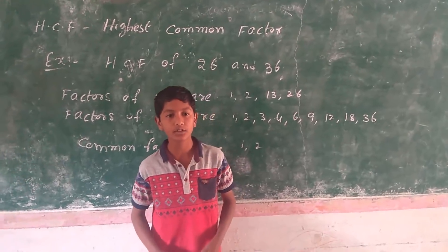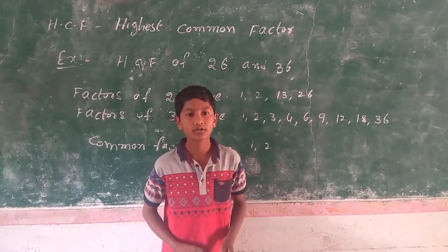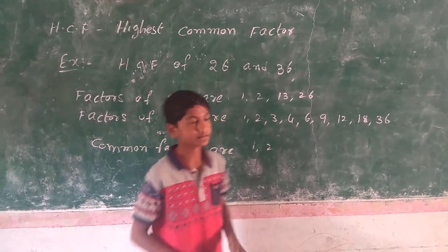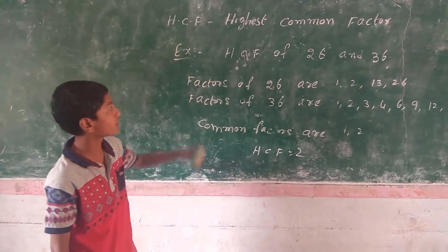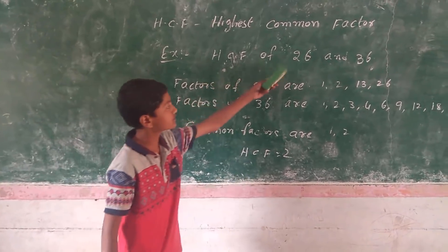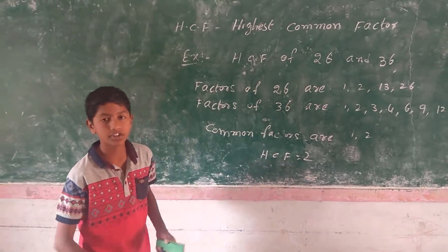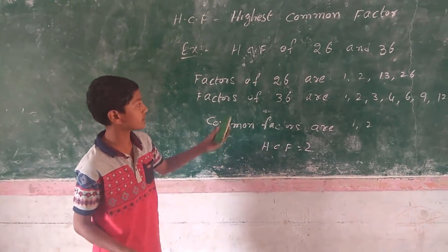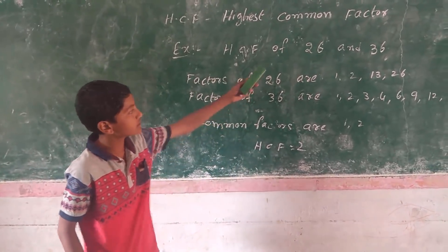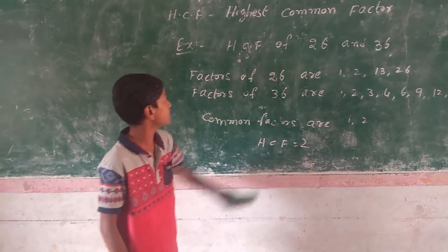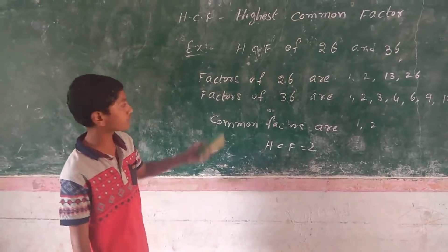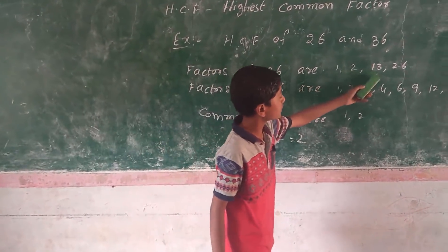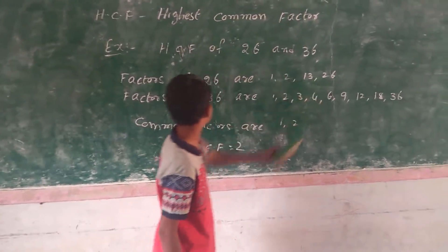Now we will take an example to understand about the HCF. Find the HCF of 26 and 36. First of all we have to write the factors of 26 and 36. Factors of 26 are 1, 2, 13, 26.